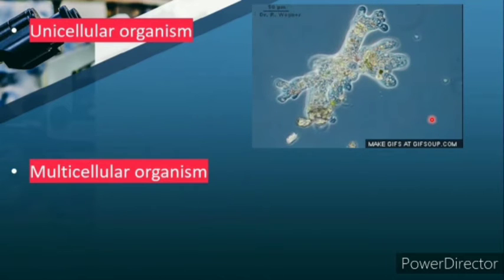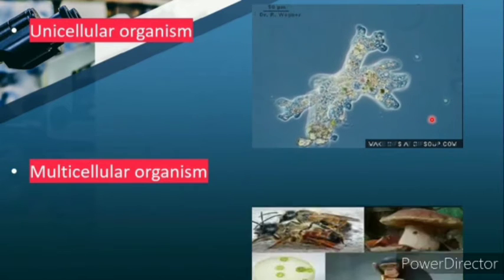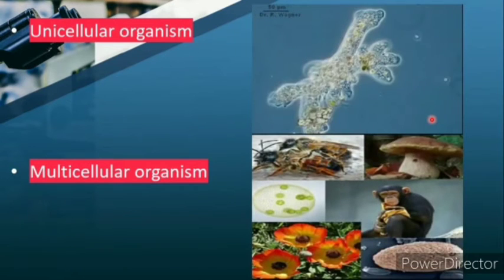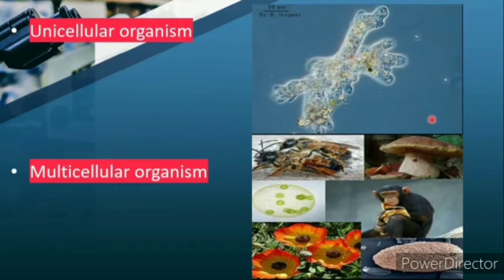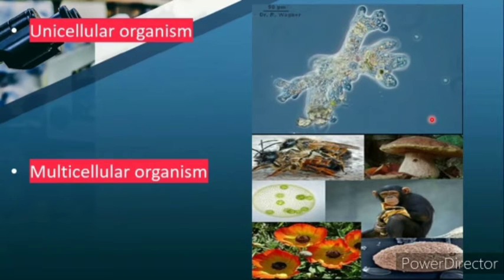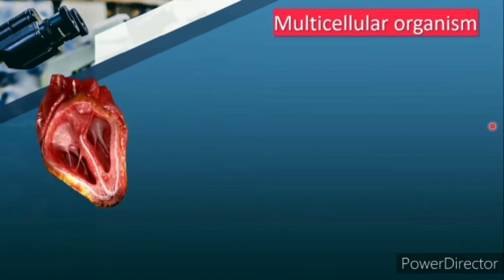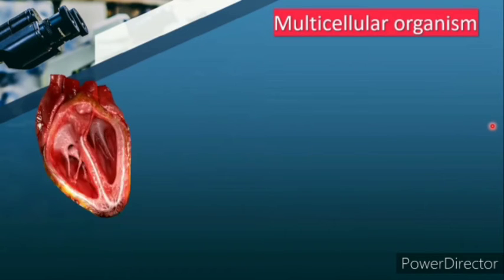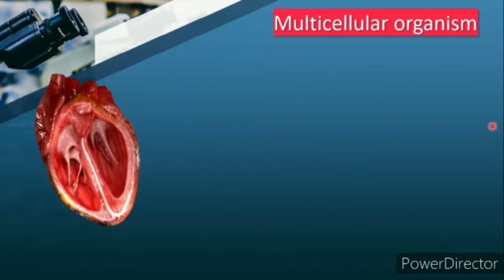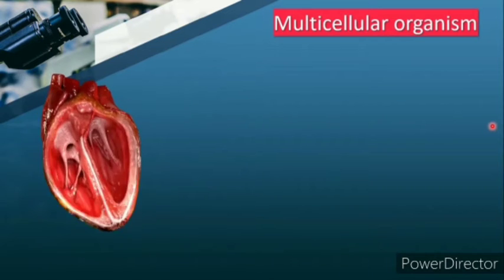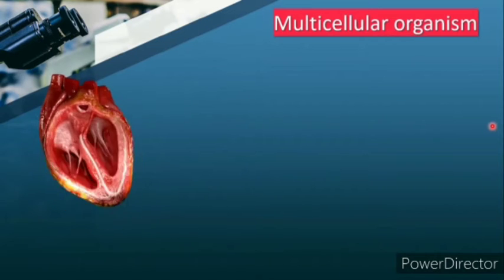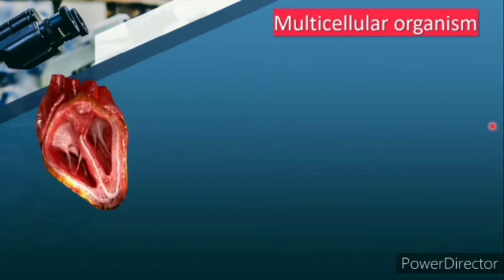Coming to another type of organism - the multicellular organism - which is made up of more than one cell, like plants, animals, insects, fungi, and some of the microorganisms. In multicellular organisms, there are various cells each performing its own function.